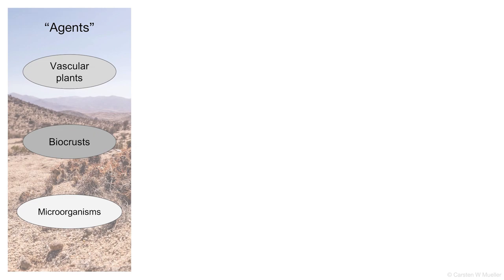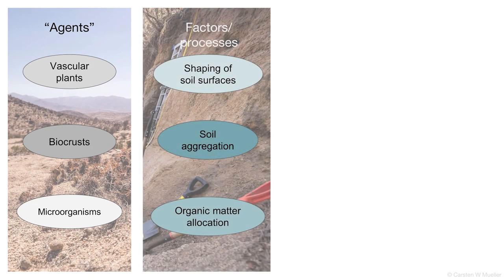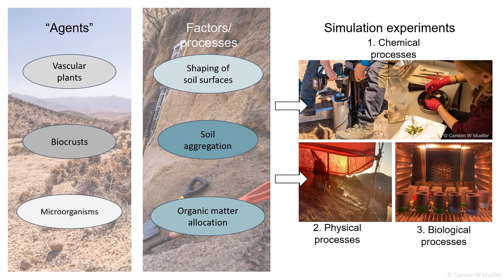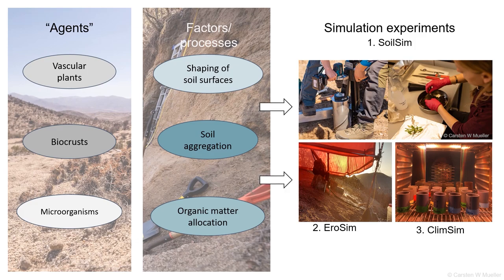In this project, our main focus is to figure out how vascular plants, biocrusts, and microorganisms contribute to shaping soil surfaces, soil aggregation, and the stabilization and allocation of organic matter. We will approach this topic in three main simulation experiments, each focusing on chemical, physical, and biological processes, and they are called SoilSim, AeroSim, and ClimSim.